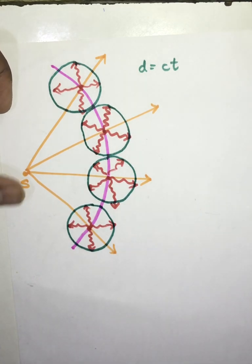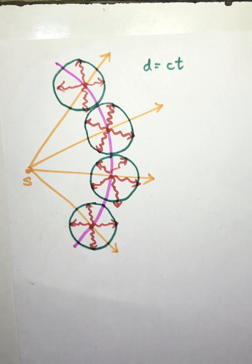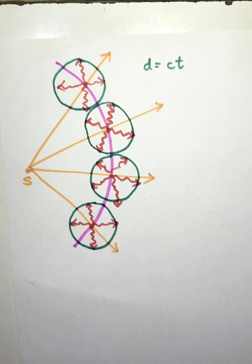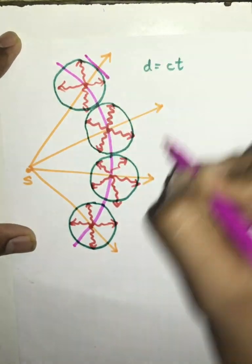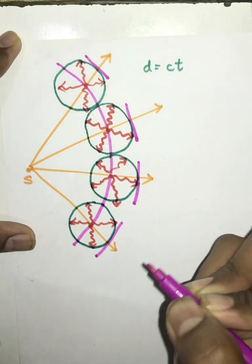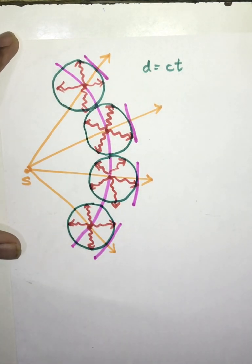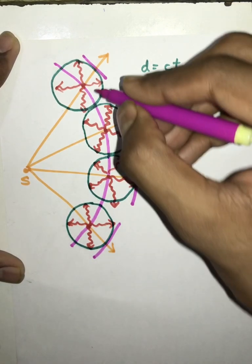This circle which we get is called the secondary wavelet. If we draw a tangent to this secondary wavelet, what we get is the secondary wavefront. So now we will draw a tangent to this secondary wavelet. According to Huygens' second principle, all the common tangents when joined together give us the secondary wavefront.